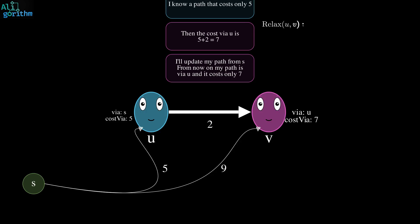More generally, this conversation can be summarized as follows. If the cost to reach V via U is less than the current cost to reach V, we update the cost via of V and set its via to U.